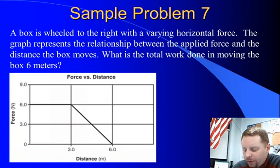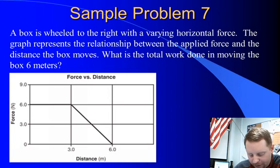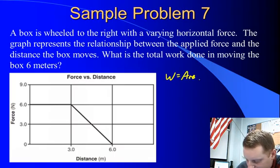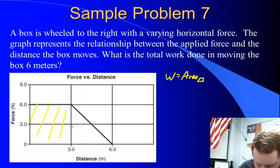A box is wheeled to the right with a varying horizontal force as shown in the graph below. What is the total work done in moving the box 6 meters? Well, once again, work is going to be the area under a force versus displacement or distance graph. So that's going to be the area of our rectangle here plus the area of our triangle.